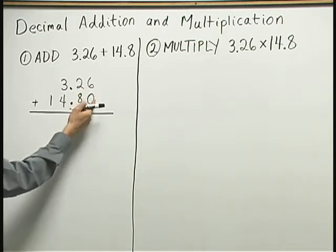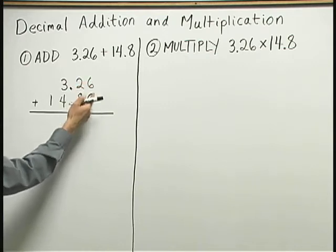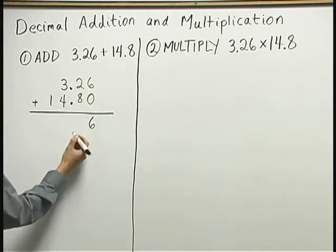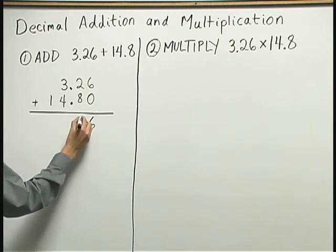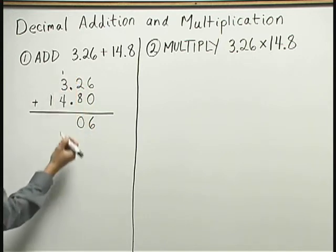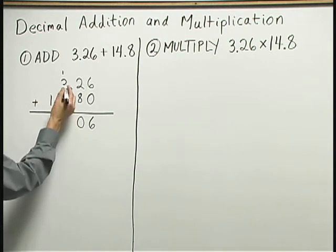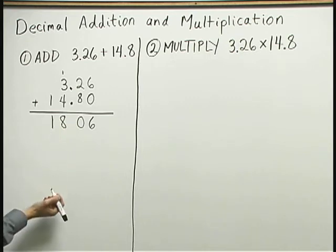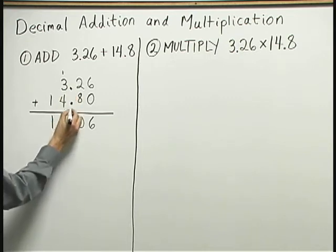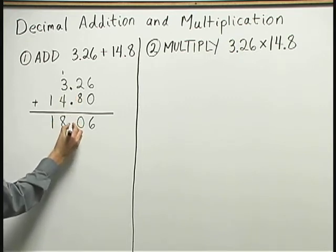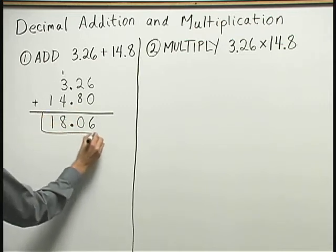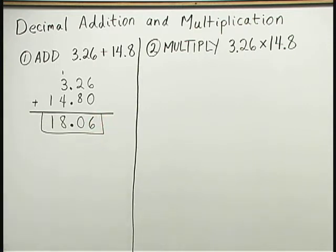Now I add as if I were working with whole numbers. 6 plus 0 is 6. 8 and 2 is 10. So I write down 0, carry the 1. 3 and 4 is 7, plus 1 is 8. And then I have 1 in front. In my answer, the decimal point goes right in line with my decimal points above. So my answer here is 18.06.